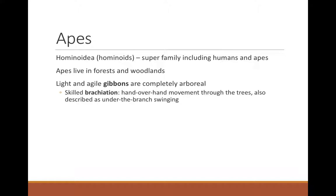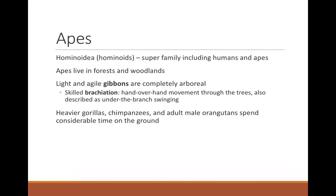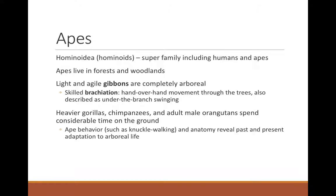When gibbons walk on the ground, they have to do so on tiptoes with their arms out for balance, like a tightrope walker. The heavier gorillas, chimps, and adult male orangutans will spend considerable time on the ground — when you're four to five hundred pounds, it's really hard to stay in the trees and reach the terminal branches where the fruit is. Knuckle walking and these really long arms are all indicative of a history of being arboreal; becoming more terrestrial was secondary.